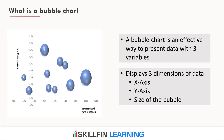A Bubble Chart is an effective way to present data showing three variables. It displays three dimensions of data represented by the x-axis, the y-axis, and the size of the bubble. Have you ever created a three-dimensional chart?